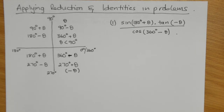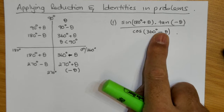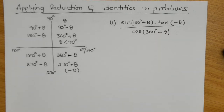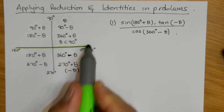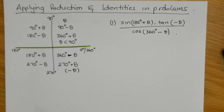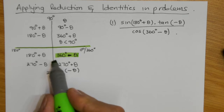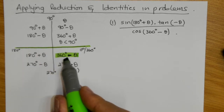We're going to be looking at reduction formulas and how we apply them to solve particular problems. Before we start, I want to highlight what we already know. If we have a horizontal reduction — reducing away from the horizontal line — our reduction formulas are as follows: in the fourth quadrant, it's 360 minus theta.